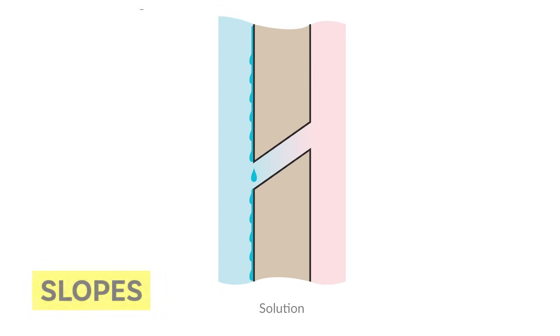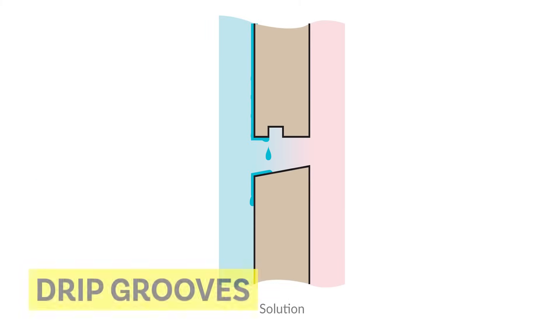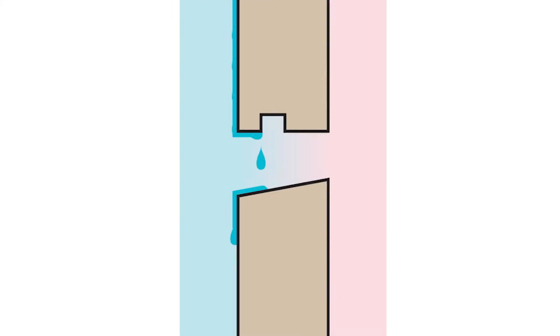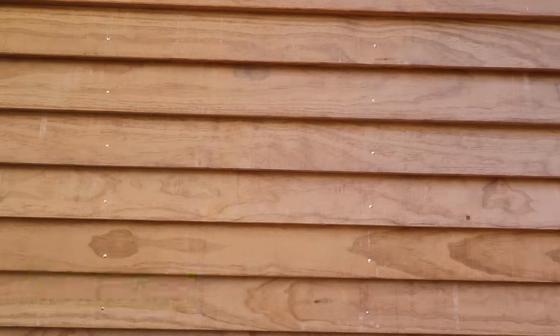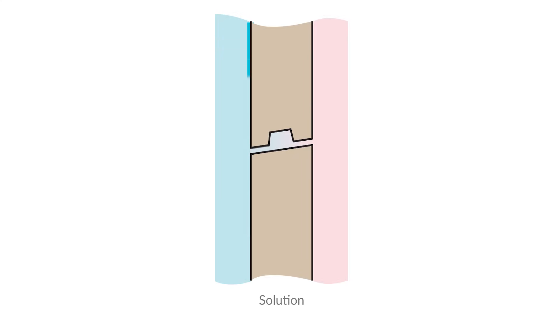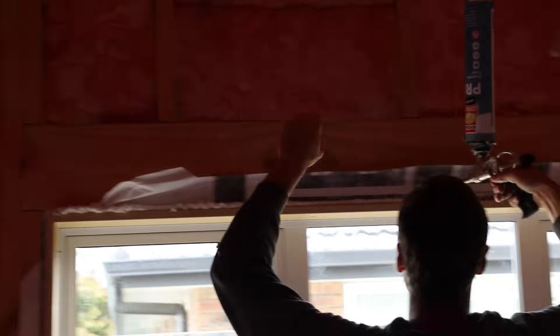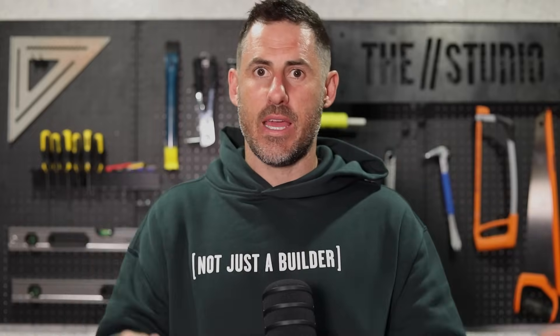Some key design elements include: slopes — making sure angled surfaces run away from the building instead of pooling; drip grooves — small indentations that stop water from running back into a surface; overlaps — layering materials that direct water away from vulnerable areas; weather grooves — gaps designed to stop water from getting inside; and seals — rubber or other materials that block water from entering joints. All these things counteract the five ways that water gets into buildings.